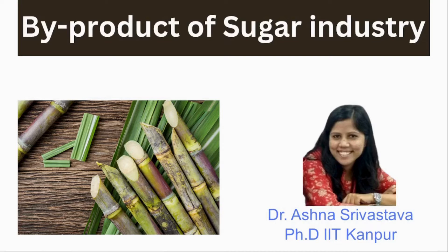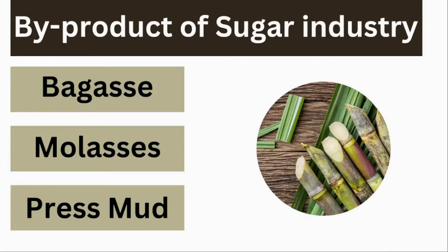Hello friends, welcome back to my channel Chemical Connect. Today we are going to study about the by-products of the sugar industry. The by-products of the sugar industry contain different varieties of materials and substances that are generated during the production of sugar from sugar cane.